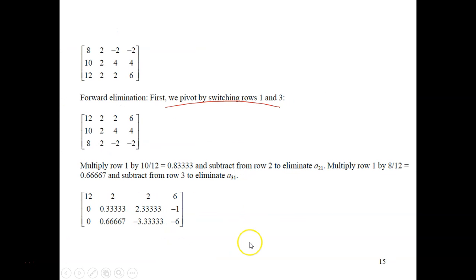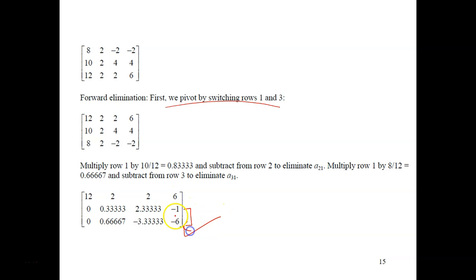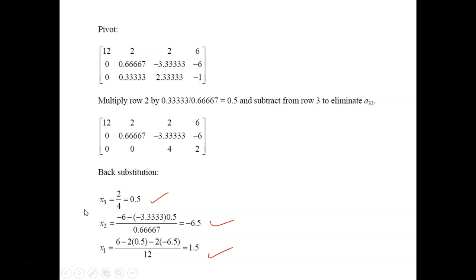When doing partial pivoting, you apply it for all steps. After the first elimination round, when you need to do more elimination, you perform a second pivot by switching rows again — this row goes down and the third row comes up. With the updated augmented matrix, you solve using the regular elimination method and obtain your answers.